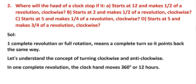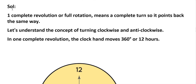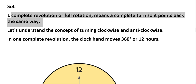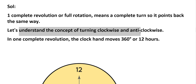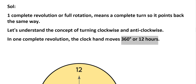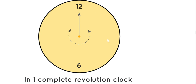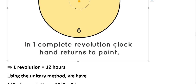Second problem: where will the hand of the clock stop if it starts at 12 and makes half of the revolution clockwise? Solution: one complete revolution means a complete turn, so it points back to the same position. In one complete revolution, the clock moves 360 degrees or 12 hours. One revolution equals 12 hours.